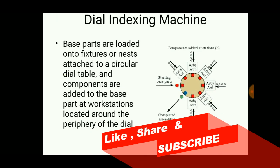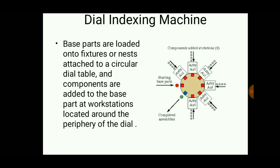Dial indexing machine consists of a dial indexing table with automated assembly machines situated on the periphery around the table. The starting parts are fixed or placed on the fixture so that the assembly machines perform assembly operations, and finally when the table is rotated, we get the completed assemblies.